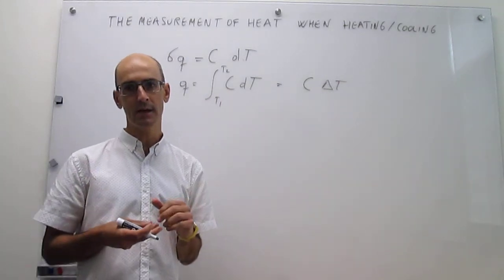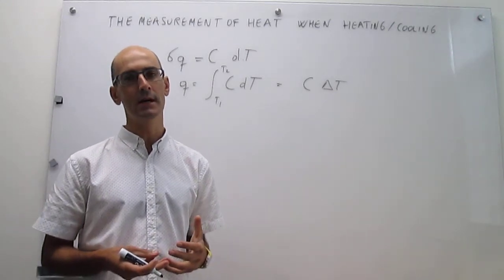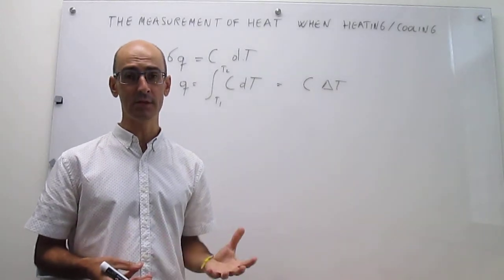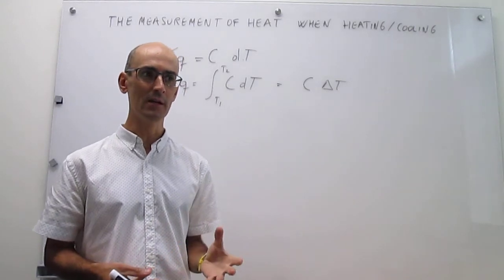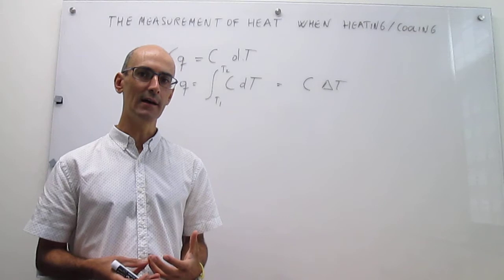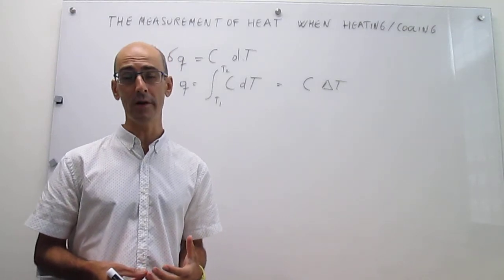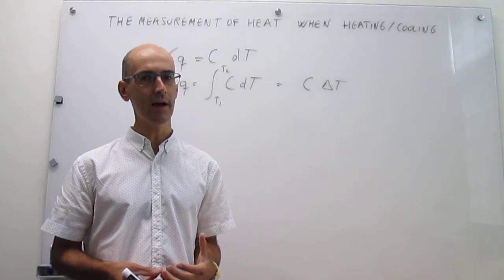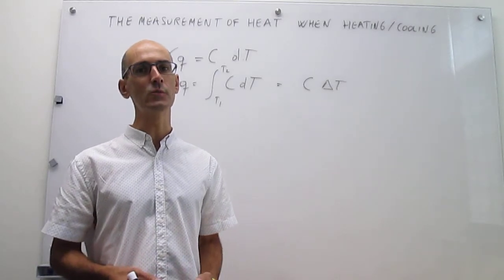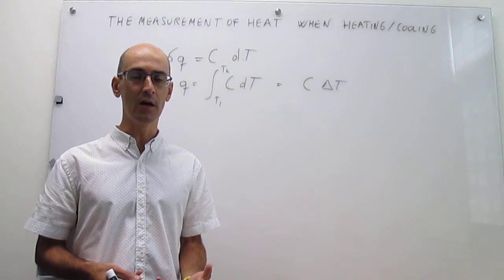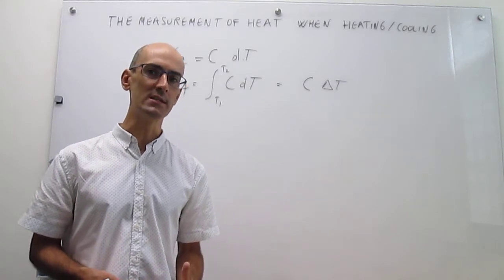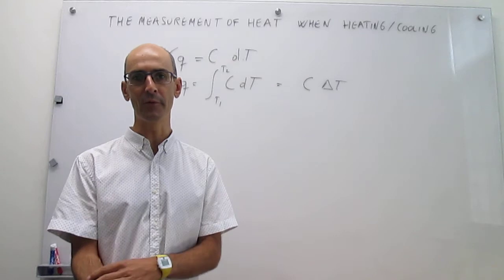The heat capacities of objects depend on the type of substance. There are substances with very low heat capacities — for example, metals. When you transfer energy as heat to a metal, it heats up really fast because of its low heat capacity. Other substances have higher heat capacities; for example, liquid water has a relatively high heat capacity for its molar mass. That is advantageous because we can use water as a very good coolant: when you transfer a lot of energy as heat to liquid water, it doesn't change its temperature very much, which is useful for thermal regulation.